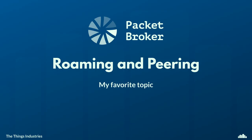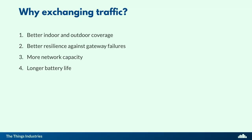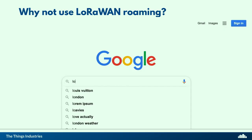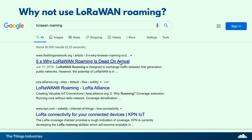Roaming and peering is my favorite topic — I've been talking about this for a few years. The most important reason to exchange traffic is to increase battery life, because that makes LoRaWAN solutions more viable. We looked at LoRaWAN roaming specifications and we don't think it's a good idea. You can Google 'LoRaWAN roaming' and my article is the first hit — it's a few minutes read explaining why LoRaWAN roaming is a bad idea.